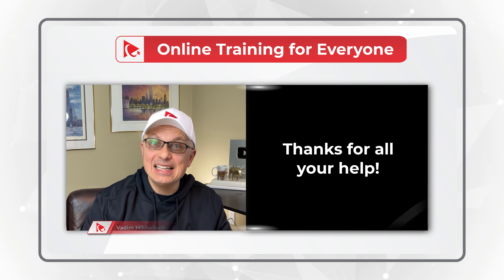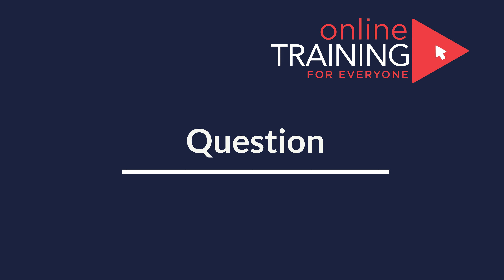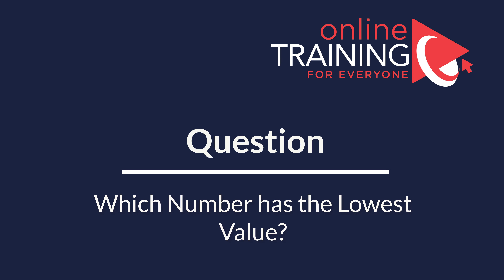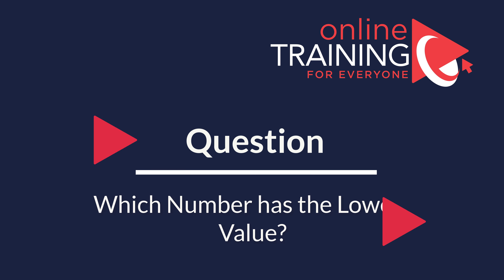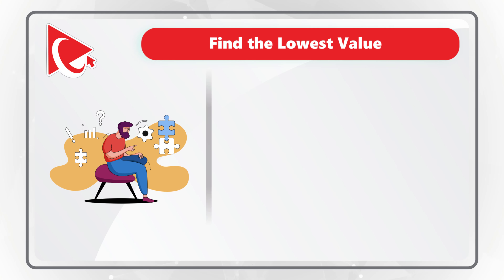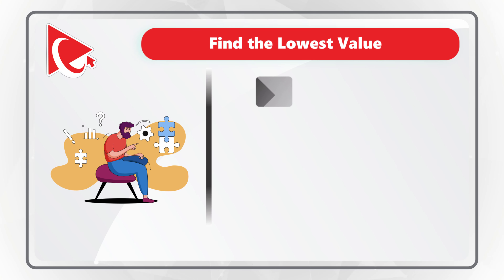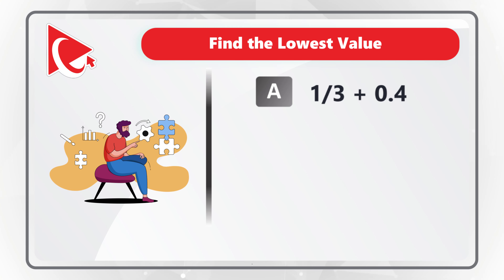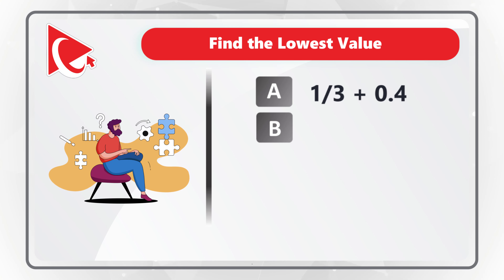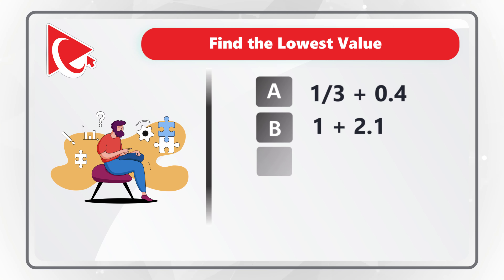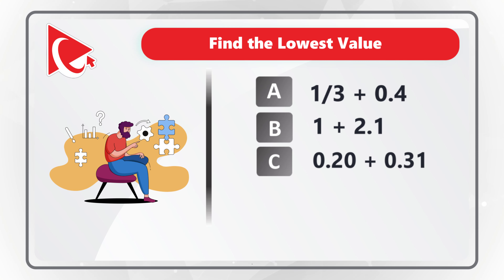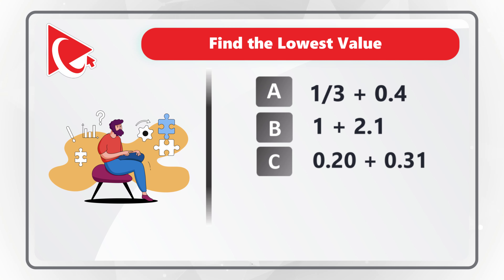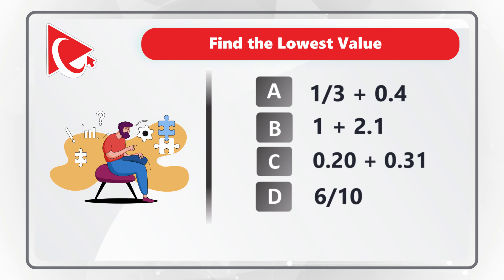Now let's continue and get you ready for the test. I love this question because it truly makes you think to determine the final answer. You need to determine which number has the lowest value. You have four choices: A — one-third plus 0.4; B — 1 plus 2.1; C — 0.2 plus 0.31; and D — 6 tenths.